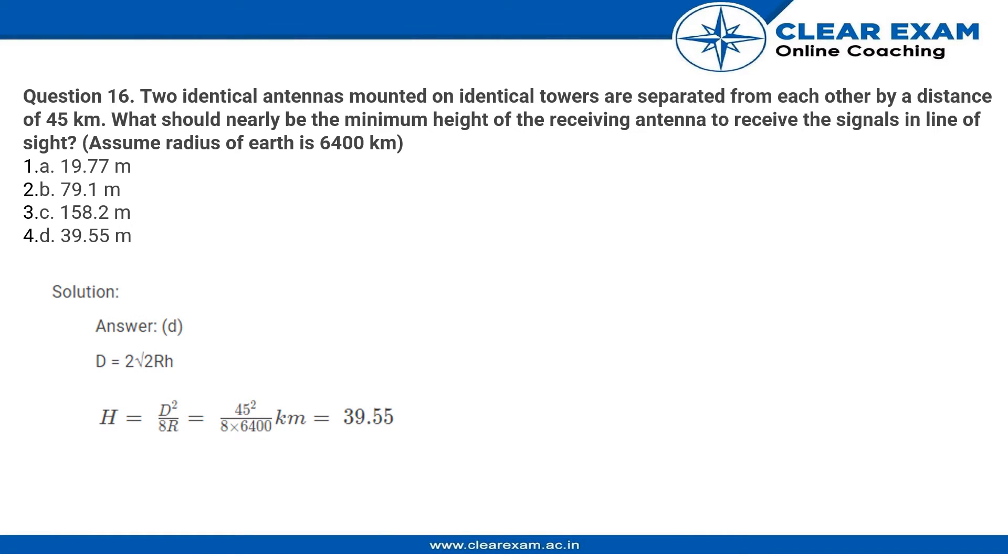The distance between those two antennas can be found by this formula: D equals 2 times root 2RH, where R is the radius of the earth and H is the height of the antenna. Using this formula,